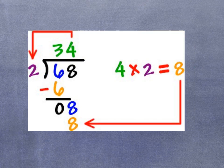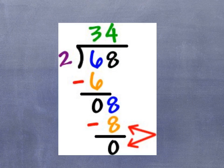From there I'm going to take 4 times 2, which gives me 8. Now I'm going to subtract 8 minus 8, which gives me 0.